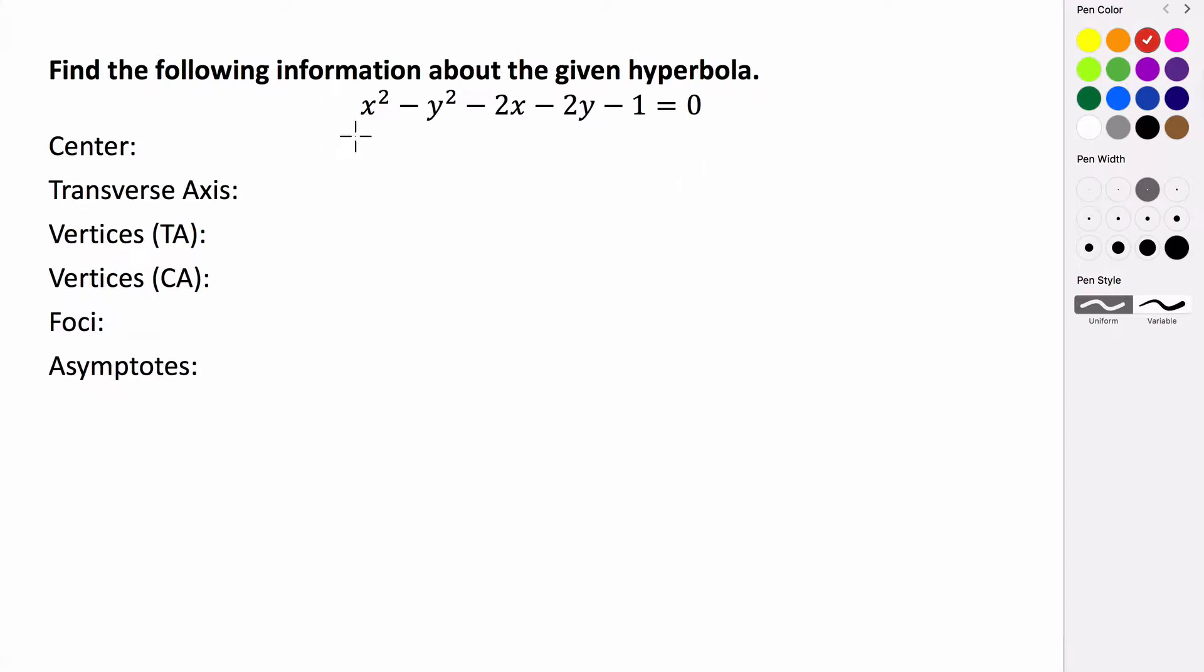In this problem, we're given the general form equation of a hyperbola. The general form equation is essentially just the expanded form of a standard form equation.